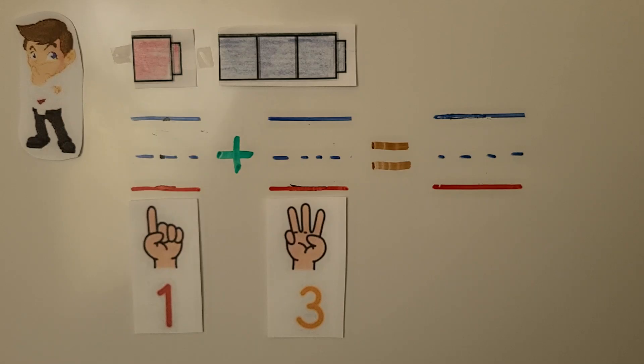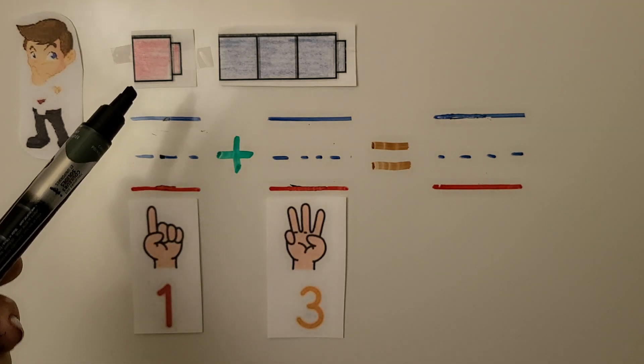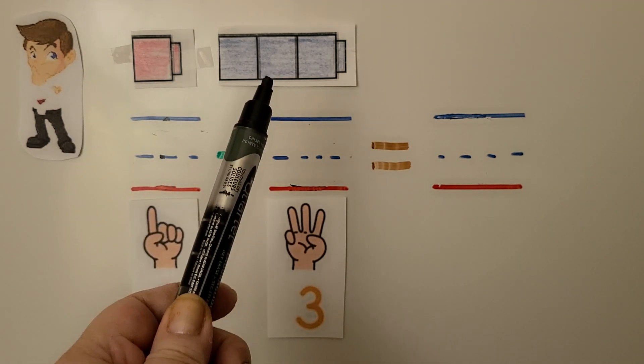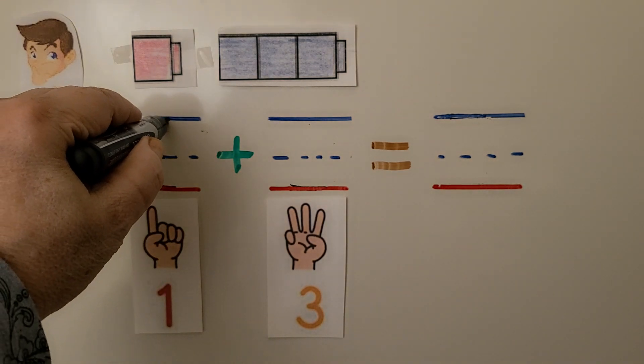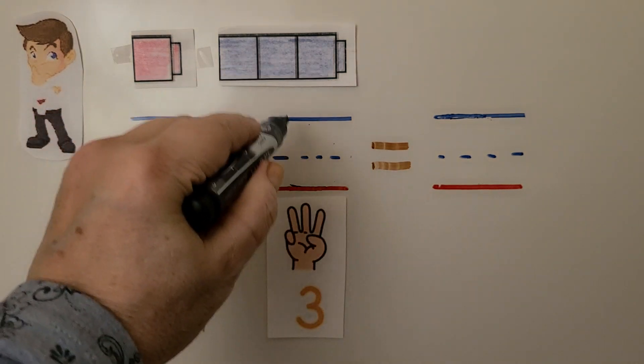Listen very carefully to this problem. Sam has one red cube and three blue cubes. How many cubes does he have? We can write the numbers. We have one red. We have three blue.